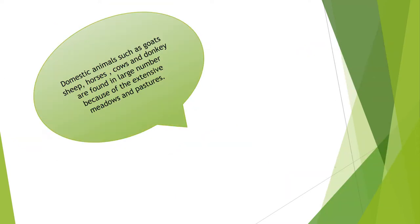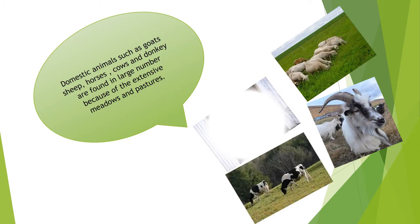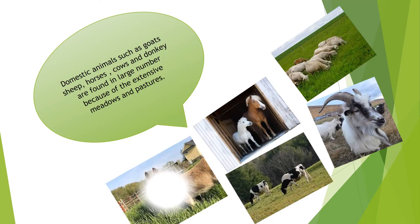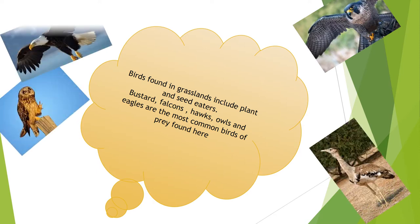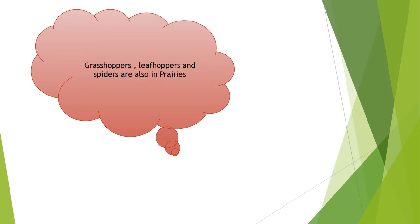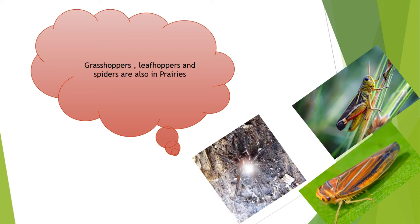Domestic animals such as goats, sheep, horse, cows and donkeys are found in large numbers because of the extensive meadows and pastures. Birds found in grasslands include plant and seed eaters. Bustards, falcons, owls and eagles are the most common birds of prey found here. Grasshoppers, leafhoppers and spiders are also found in prairies.